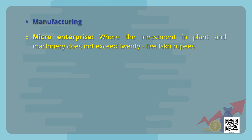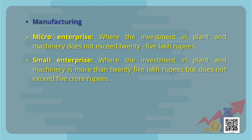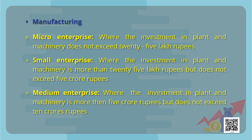If they are in manufacturing business, then an enterprise in which the investment in plant and machinery does not exceed 25 lakh is called a micro enterprise. An industry in which investment is more than 25 lakh but does not exceed 5 crore rupees is called a small enterprise. And those in which investment is more than 5 crore but less than 10 crores are called medium enterprises.